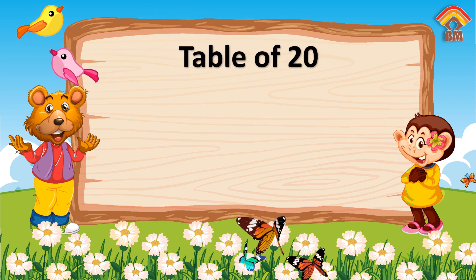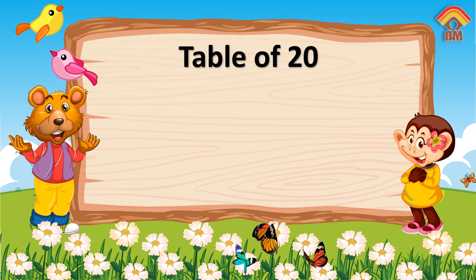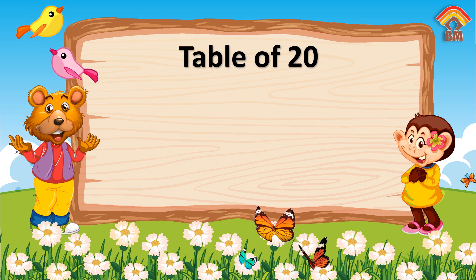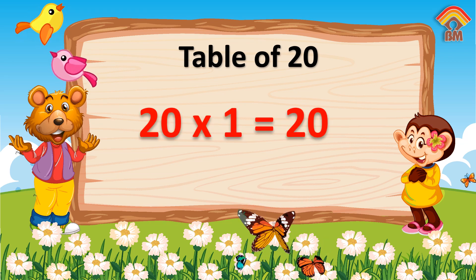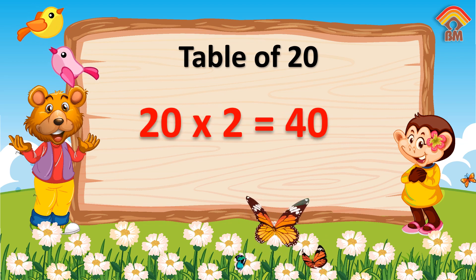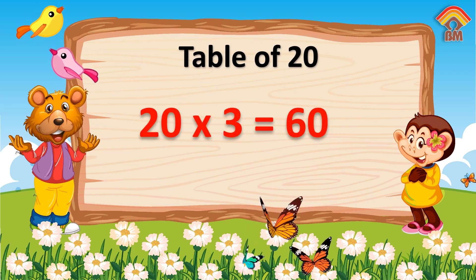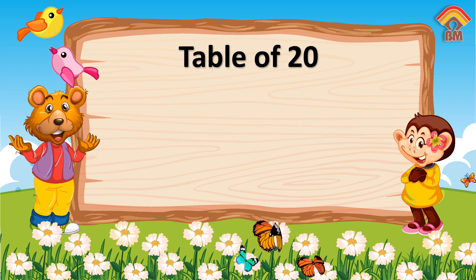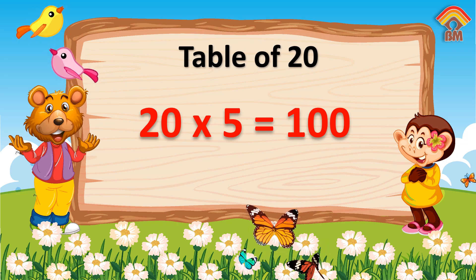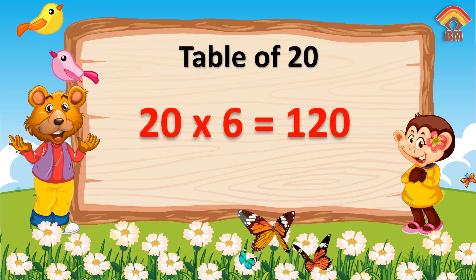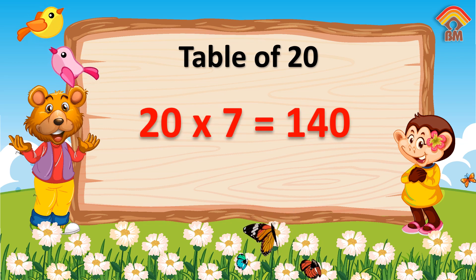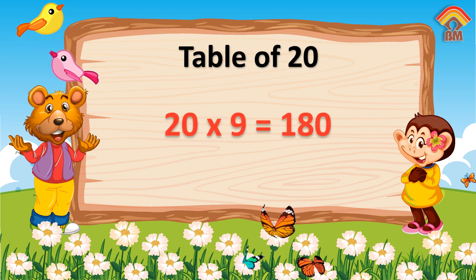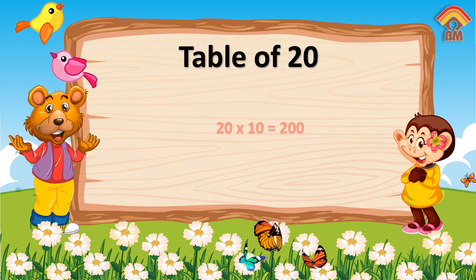Table of Twenty. 26's are 120, 27's are 140, 28's are 160, 29's are 180, 20 10's are 200.